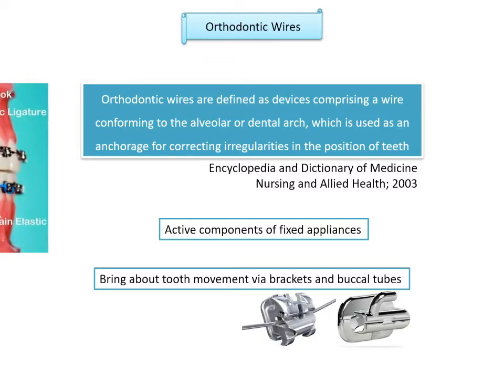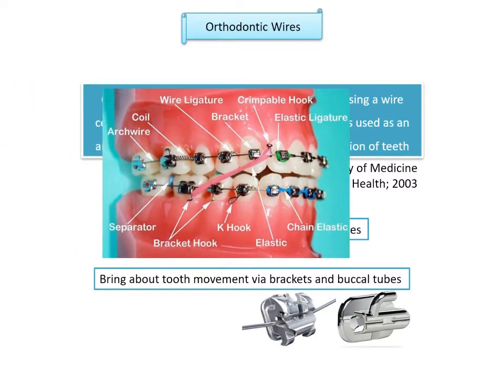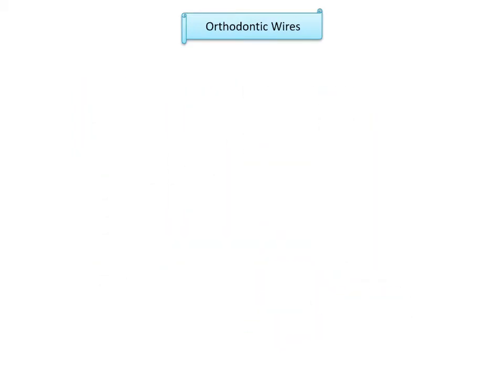In this image, these are the arch wires which pass through the brackets and buccal tubes present on the facial surface of the teeth, and are attached to all the teeth in the arch, bringing about tooth movement.